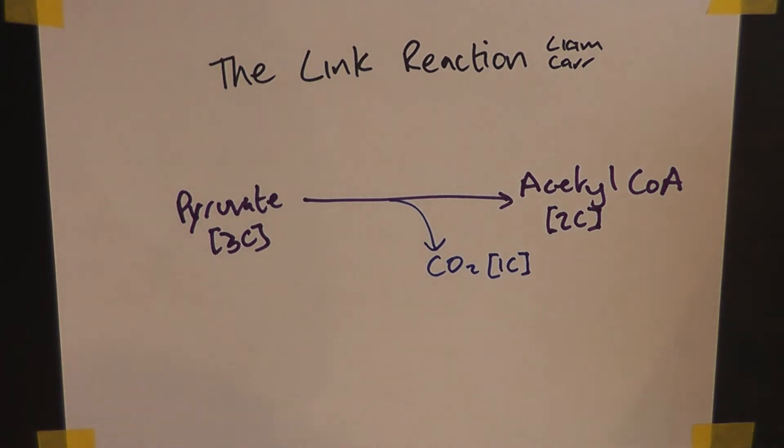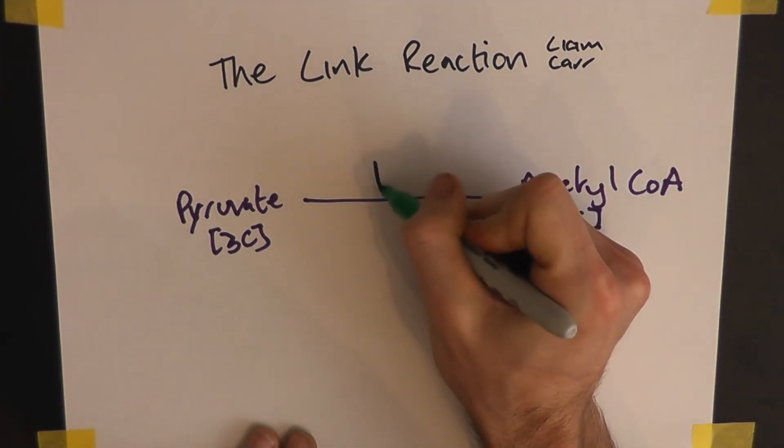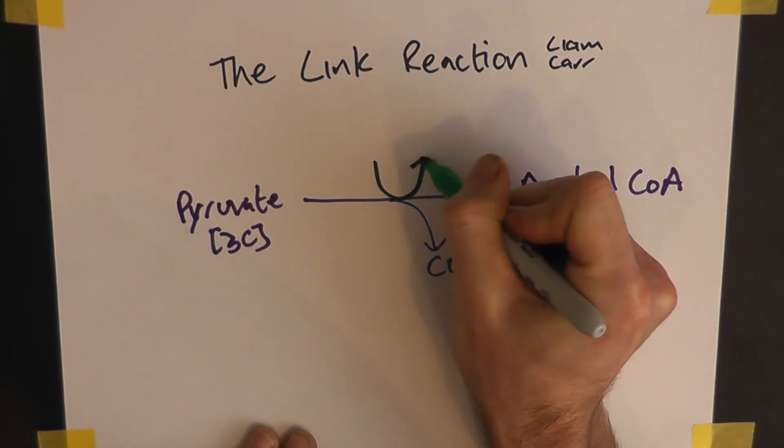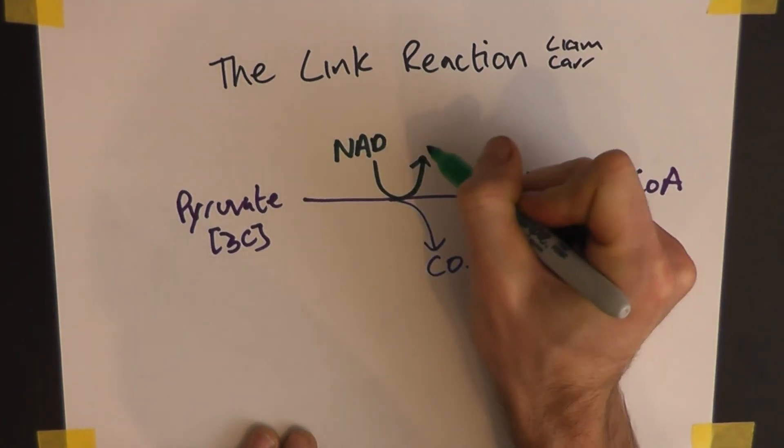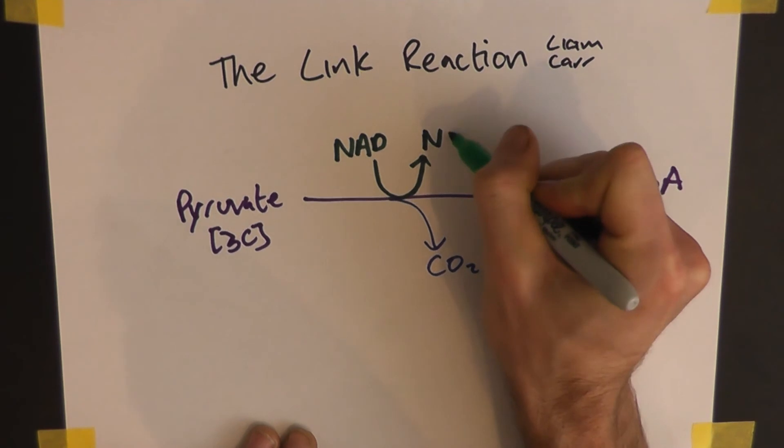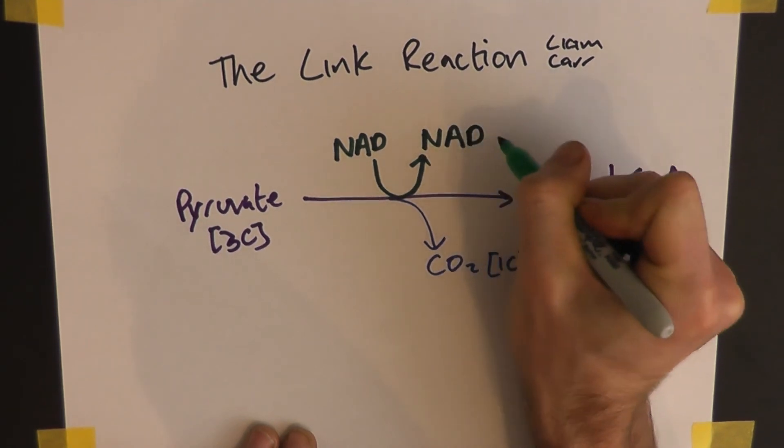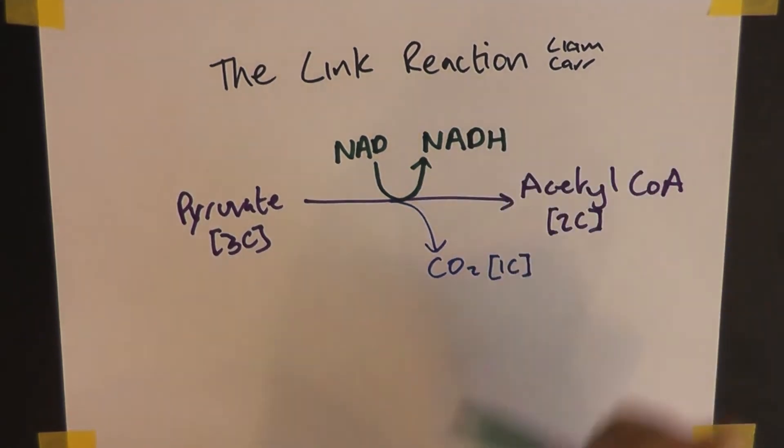But carbon isn't the only difference between pyruvate and an acetyl group. You also have to take hydrogen off, and when we remove hydrogen, we get a hydrogen carrier, NAD. It gets converted into NADH.